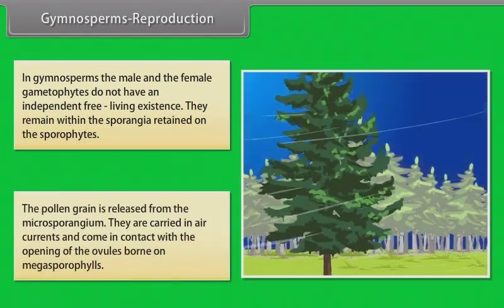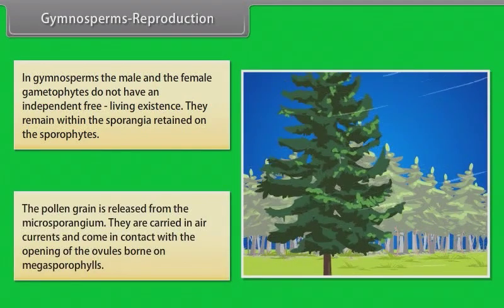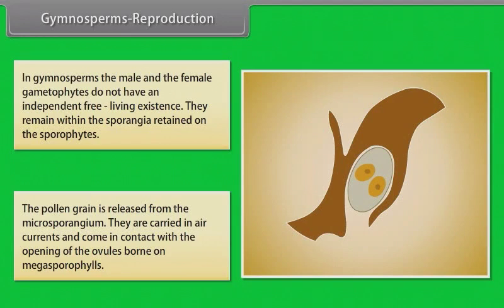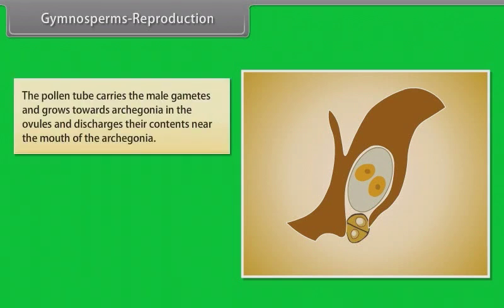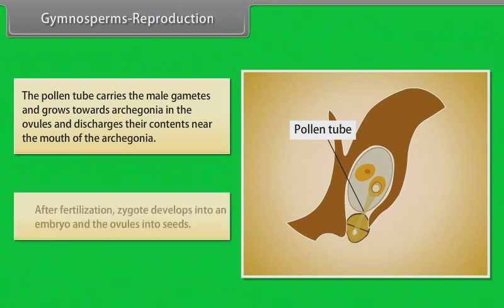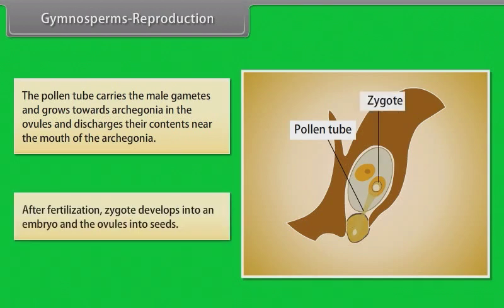The pollen grain is released from the microsporangium. They are carried in air currents and come in contact with the opening of the ovules borne on megasporophylls. The pollen tube carries the male gametes and grows towards archegonia in the ovules and discharges their contents near the mouth of the archegonia. After fertilization, zygote develops into an embryo and the ovules into seeds.